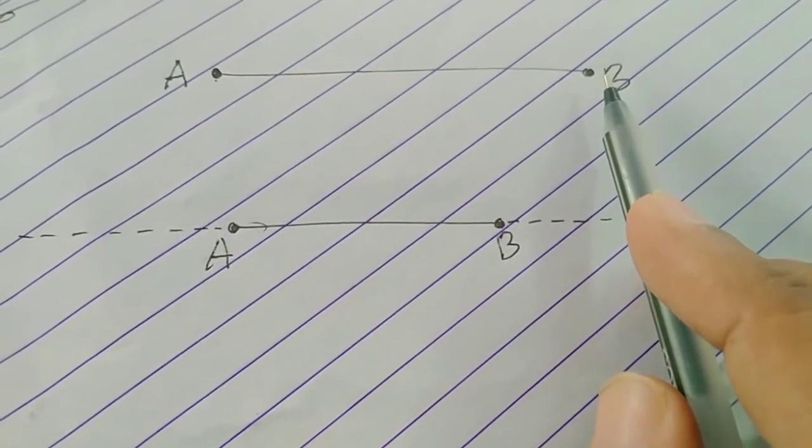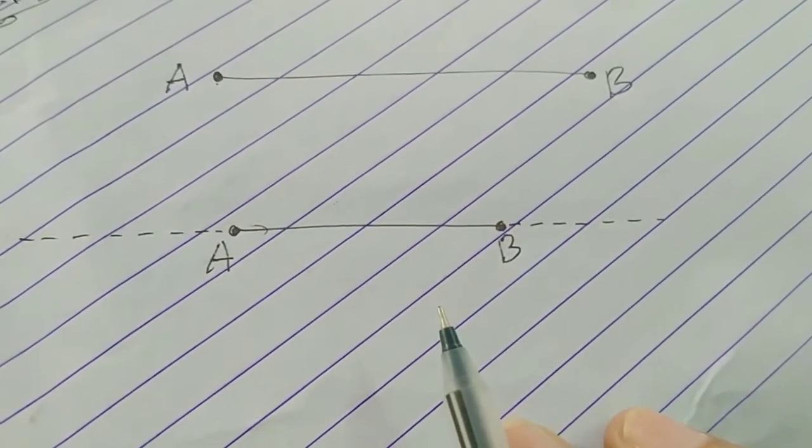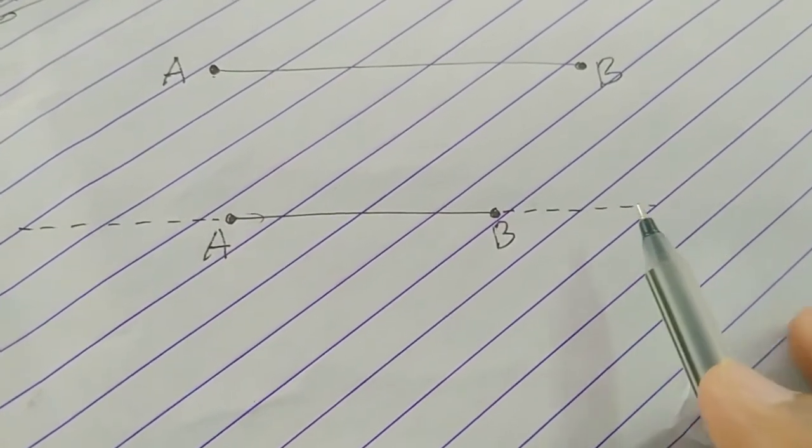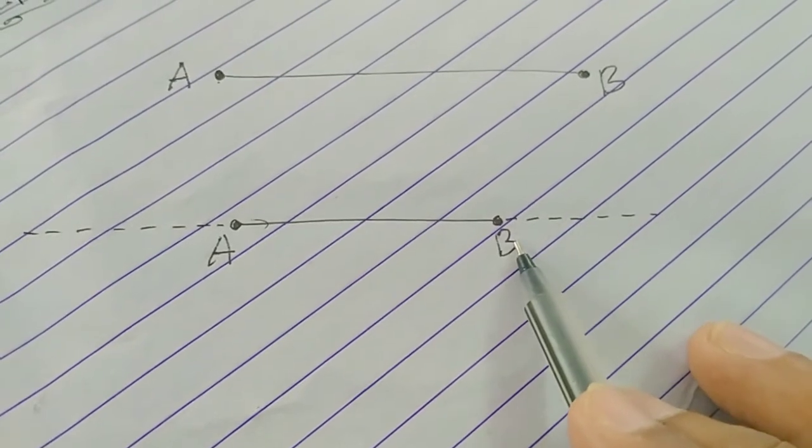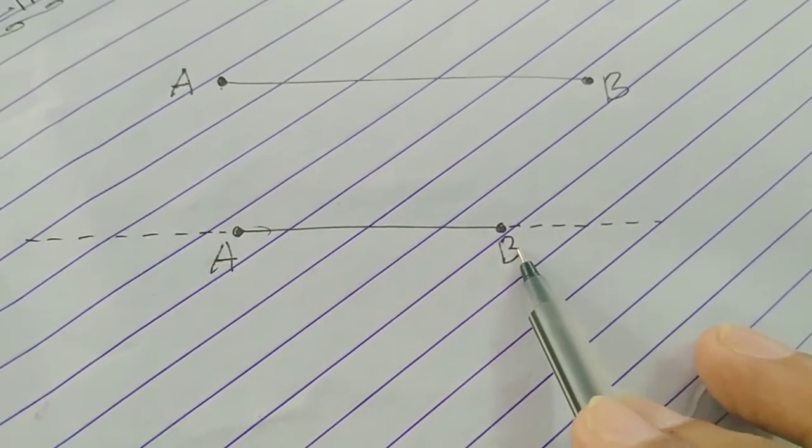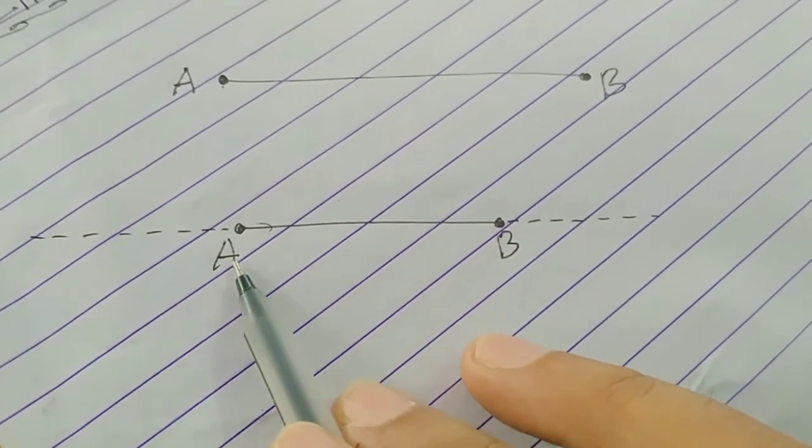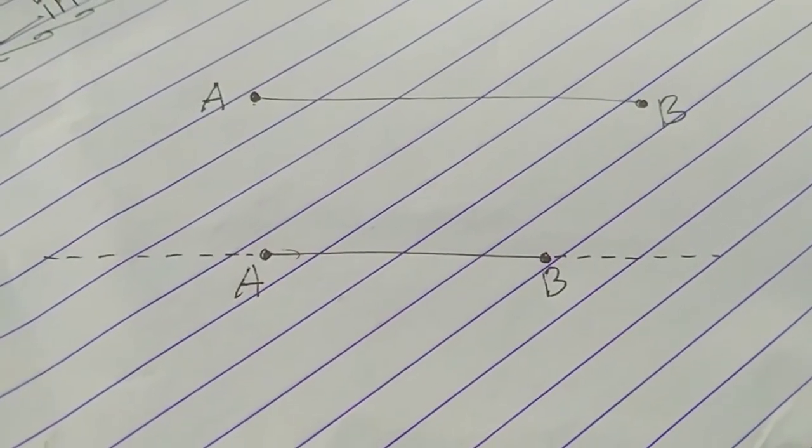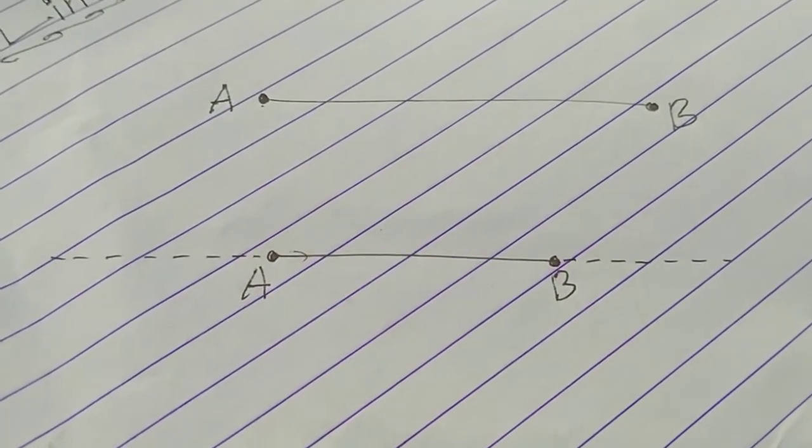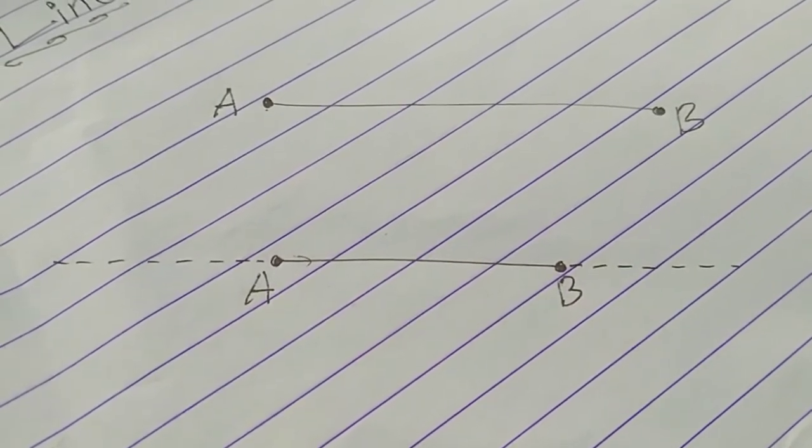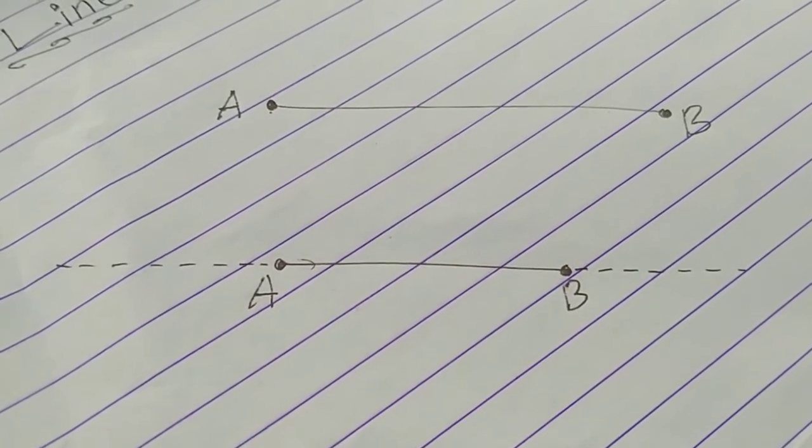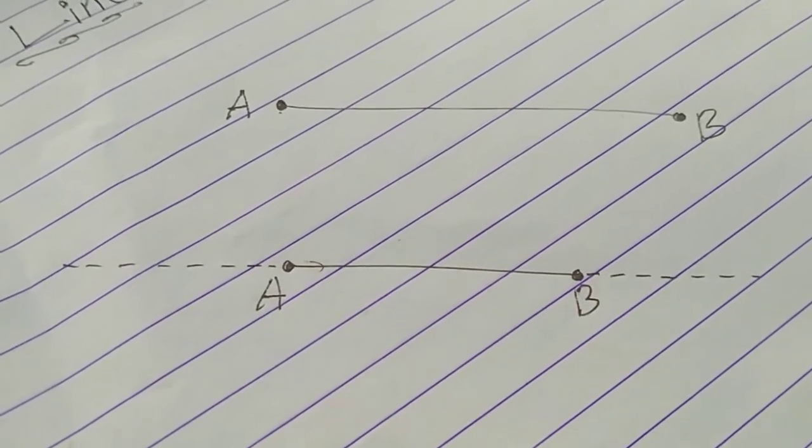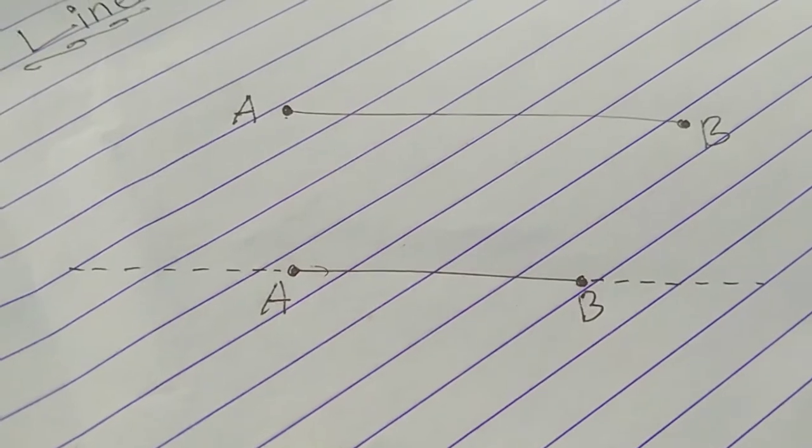Can we extend this line further on the side of point B? On the side of point A, how far can we extend it? We can extend the line in both directions till the edges of the paper. If the paper is very big, the line can be very long too.